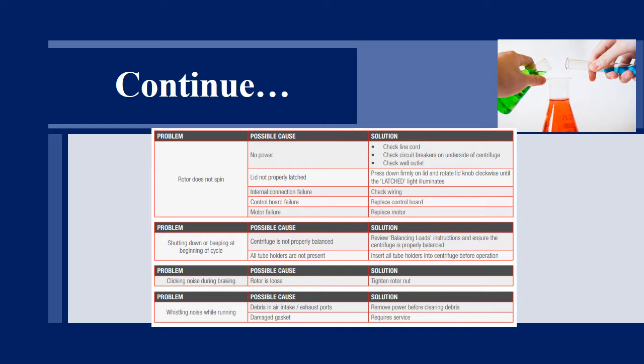The fifth problem we may face in the centrifuge is clicking noise during braking. It can occur due to the rotor being loose, so we have to tighten the rotor nuts. Last problem that can occur in the centrifuge is whistling noise while running. It can be due to the air intake and exhaust ports. We have to remove power before cleaning debris. If there is damage, we may require services for the movement or for the correction of the gasket.